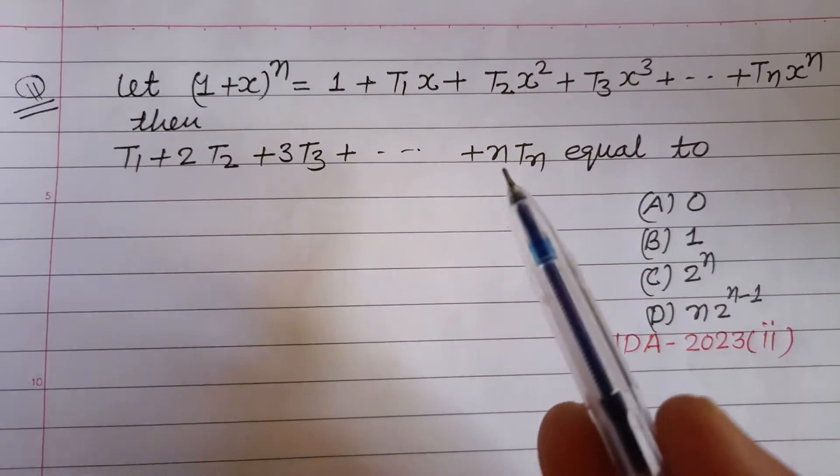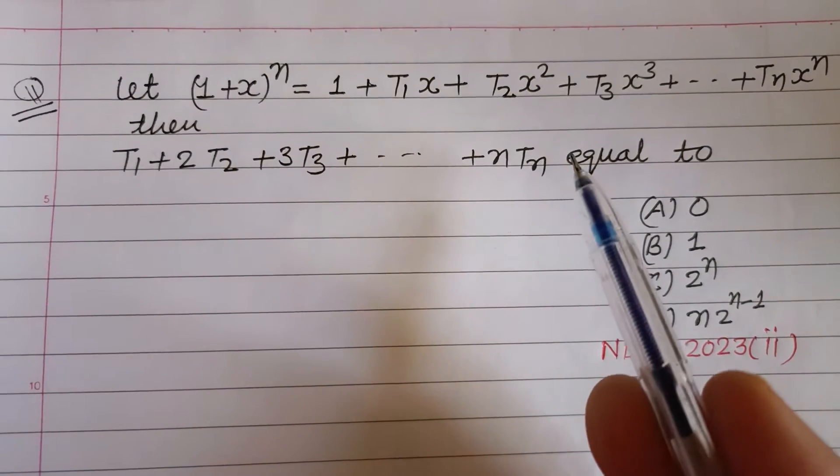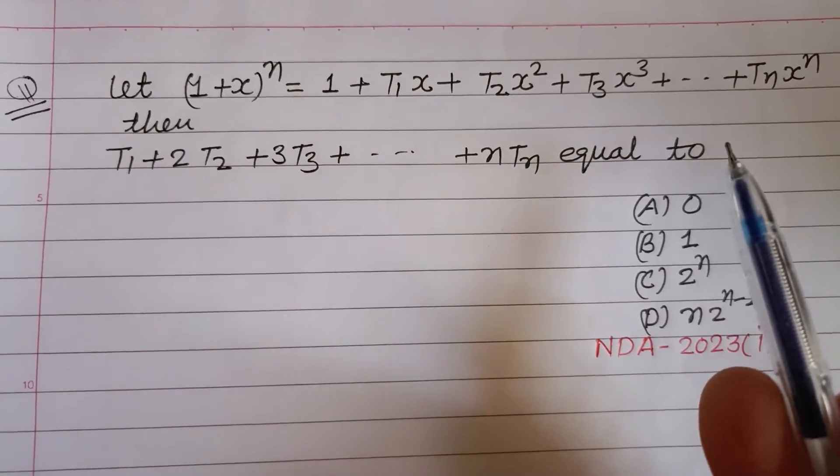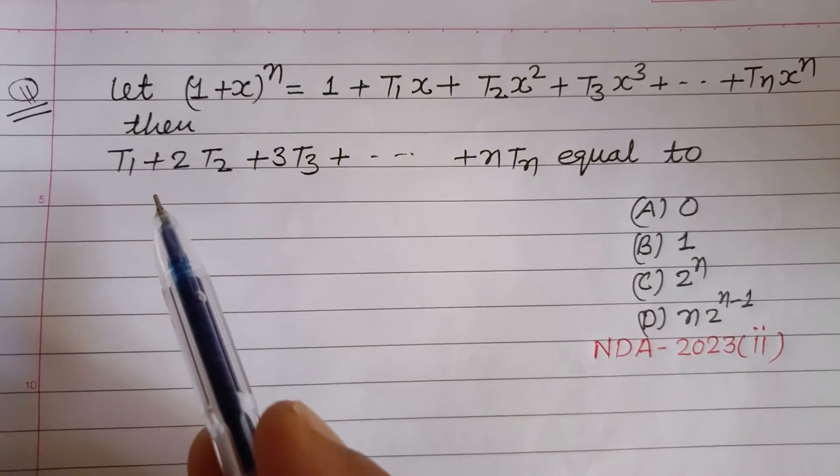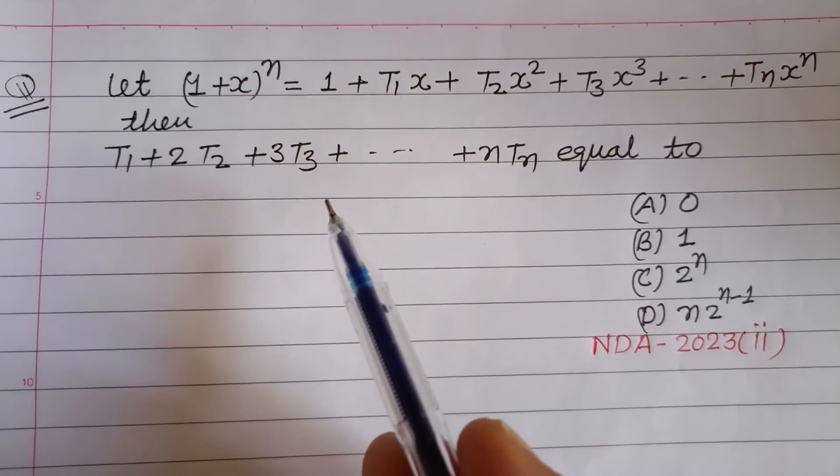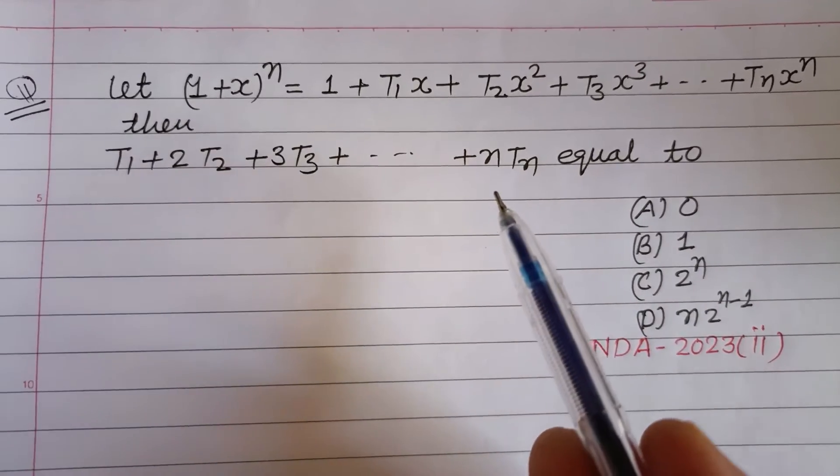Let (1+x)^n = 1 + T₁x + T₂x² + T₃x³ + ... + Tₙx^n. Then the value of T₁ + 2T₂ + 3T₃ + ... + nTₙ equals?